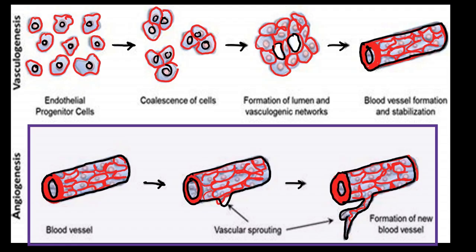In the first diagram, endothelial progenitor cells fuse together to form a lumen and create a de novo new vessel — this is vasculogenesis. Since a single vessel cannot supply the entire retina, branches are needed. In the second picture, the new vessel develops sprouting that forms additional vessels from the existing one — this is called angiogenesis.